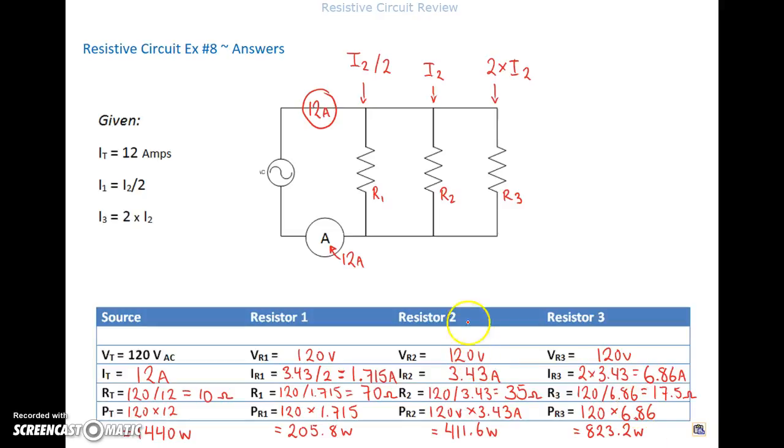The second resistor has 120 across it as well. Its current we found to be 3.43. So 120 divided by 3.43 gives me a resistance value of 35 ohms. The power value for this guy is 120 times 3.43, giving me 411.6 watts.